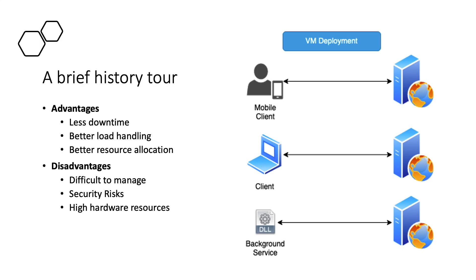Another advantage of VM deployment is load balancing. If the mobile client got an influx of users from 5,000 to 20,000, instead of upgrading resources for all machines, we only needed to upgrade the single machine's RAM, CPU allocation, and hard drive to handle the load better. Virtualization also enables dedicated resource allocation — for example, allocating 1 GB of RAM to the background service and 3 GB each to the web client and mobile client. When creating a virtual machine, we can specify how much memory, CPU cores, and hard drive space each VM gets.